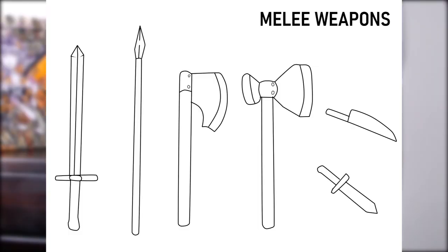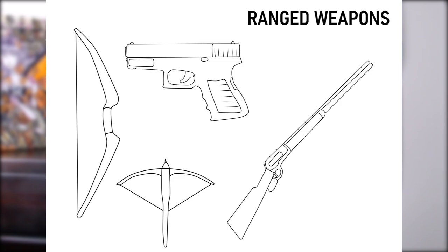The primary weapon types you will usually see are melee weapons — swords, axes, daggers, or spears — anything that can be wielded by hand. Then you have ranged weapons, which are things like guns, rifles, bows and arrows, or javelins — things that are thrown or shot from a range.